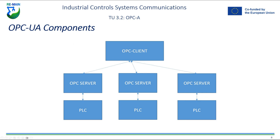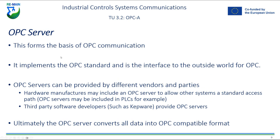The OPC UA components include the OPC client, OPC servers, and the assets that interface with the server. The client can get data via the OPC server, and that data can be related to any factory-based asset communicating with an OPC server. The server itself forms the basis of OPC communications, implementing the OPC standard as the interface to the outside world. Servers can be provided by different vendors — many hardware manufacturers now include an OPC server to allow other systems a standard access path. For example, within your PLC, you can set up the PLC to have an OPC server so clients can interface with it and get the data they require.